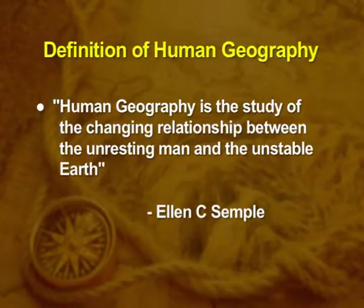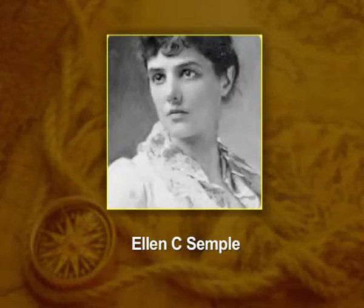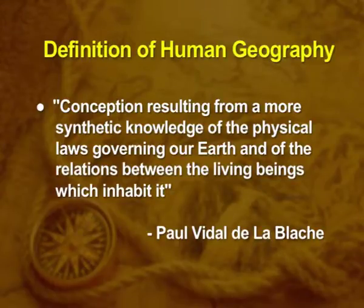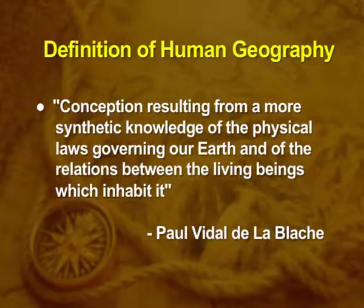LNC Semple, an American geographer, defined human geography as the study of the changing relationship between the unresting man and the unstable Earth. She not only established the interdependencies between man and the Earth as Ratzel did, but also explained the ongoing interaction between the ever-developing man and the ever-changing Earth. Paul Vidal de la Blache, a French geographer, defined geography as the conception resulting from a more synthetic knowledge of physical laws governing our Earth and the relations between the living beings which inhabit it. He introduced the concept of possibilism, which we will learn in forthcoming lectures.